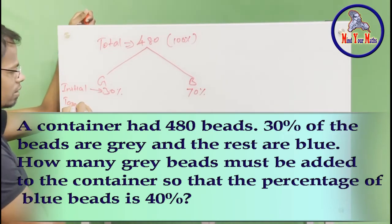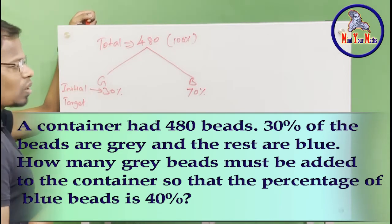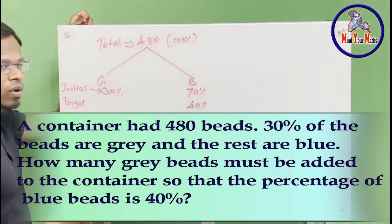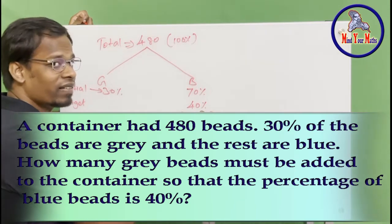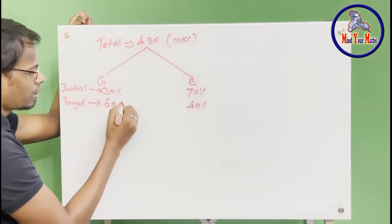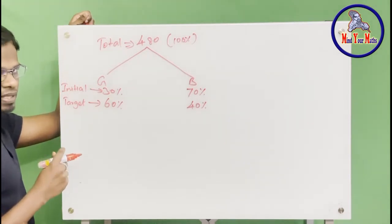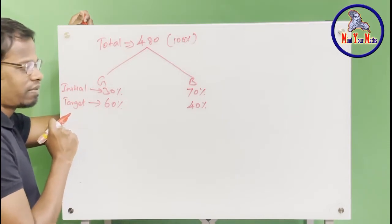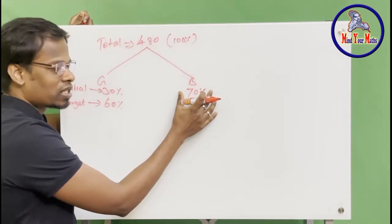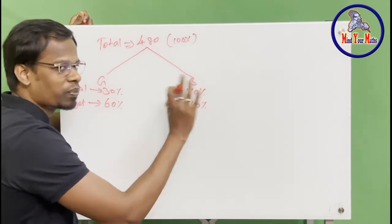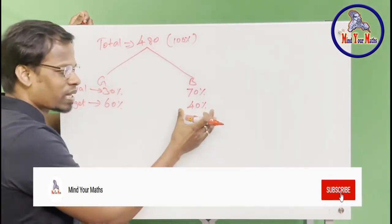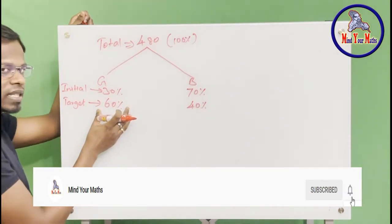Now, the target — what we need is blue to be 40%. And in that case, what will be gray? 60%. So the target will be 60% gray and 40% blue. But there is another condition: we can only change the gray part. We should never touch the blue part. Whatever blue beads are there in the container, we are not supposed to increase or decrease them. We should only increase the gray part such that blue becomes 40% and gray becomes 60%.